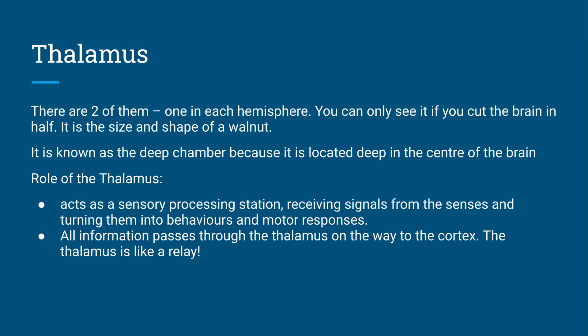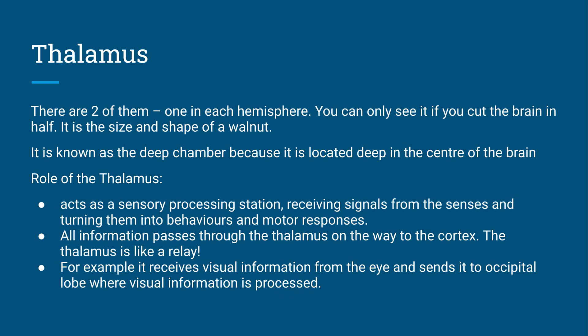Also, all information passes through the thalamus on the way to our cortex. The thalamus is a little bit like a relay station. So all the information that we receive goes through the thalamus and then goes off to our cortex to be processed. For example, it receives all the visual information from the eye and then it will send it to the part of the brain where all that visual information gets processed.